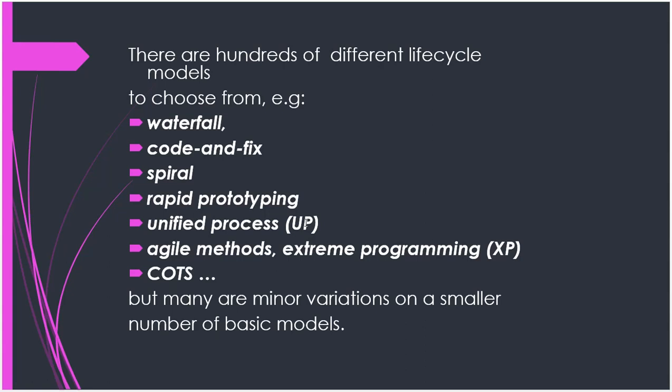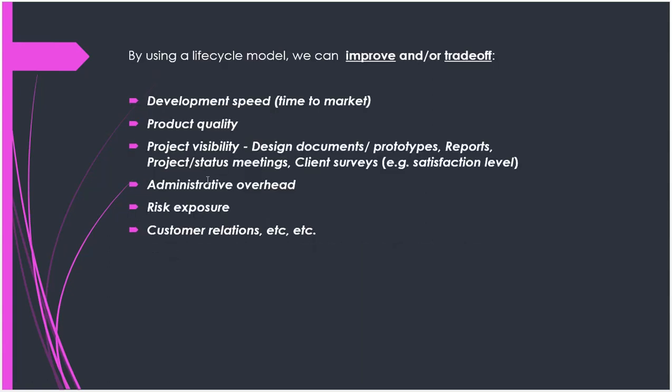There are many types of methodologies that have been developed. The key ones we want to look at are the waterfall model, the agile methods — which include rapid prototyping and unified process — commercial off-the-shelf systems, and the spiral model. Just keep in mind: waterfall, agile, and spiral are the three main ones.